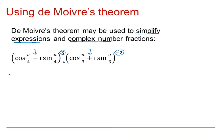So applying the theorem to this first complex number, we get cos of 3 times pi by 4 plus i sine 3 lots of pi by 4. So that's the first one done. And then applying it to this one, we get the cos of minus 2 lots of pi by 3 plus i sine minus 2 lots of pi by 3.